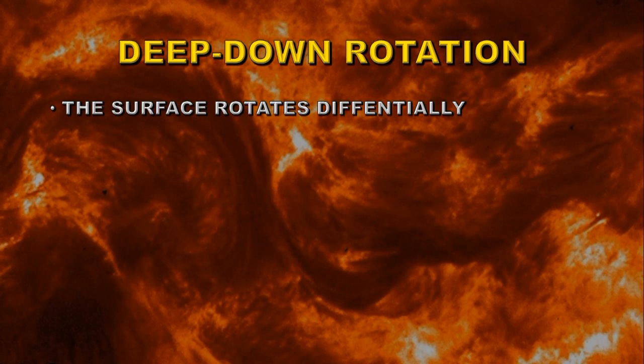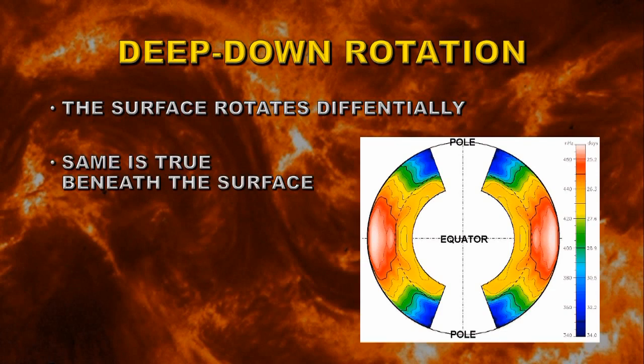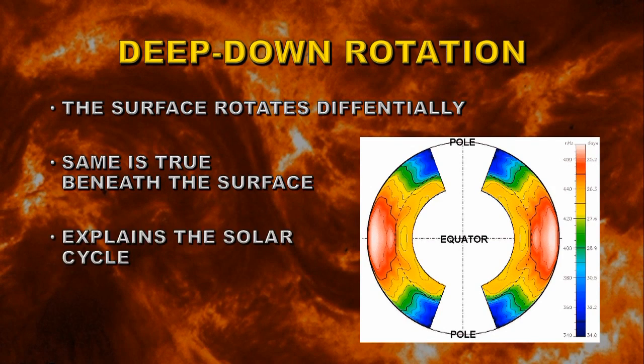So we've discovered that the surface rotates differentially, at different rates at different latitudes. However, if you go down deeper into the Sun you find there's also differential rotation as a function of the radius of the Sun. So the deeper you go down, the slower the Sun rotates. This also causes a twisting and churning of the magnetic fields and is actually one of the explanations for the solar cycle, as we will see in a later video.